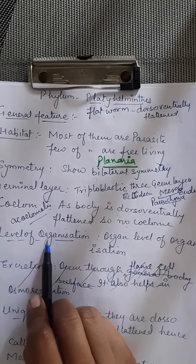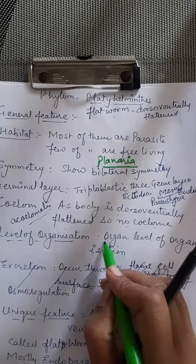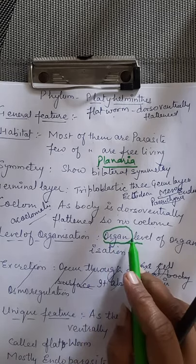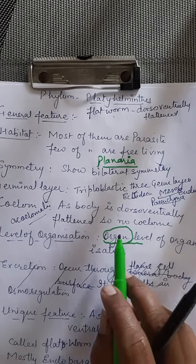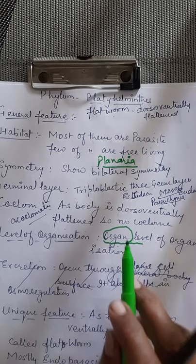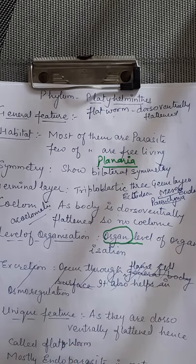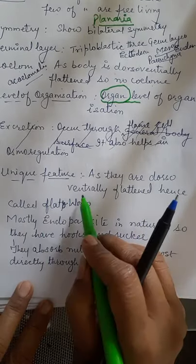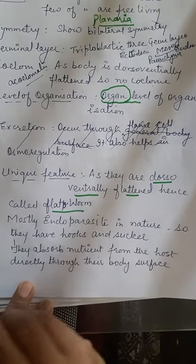Next is the level of organization — they show the organ level of organization, meaning organs are present but not organ systems. They have excretory organs, digestive organs, and respiratory organs, but no complete systems. Their unique feature is that they are dorso-ventrally flattened, so they are called flatworms.